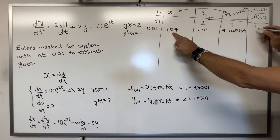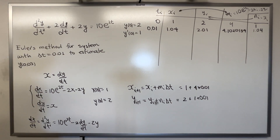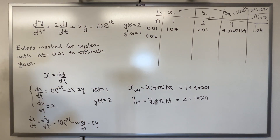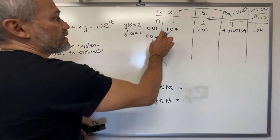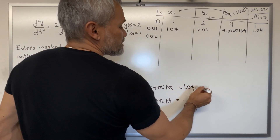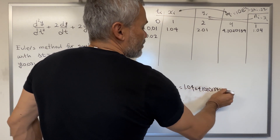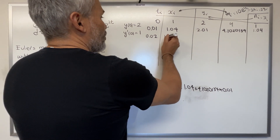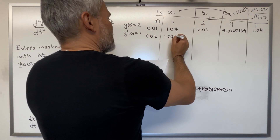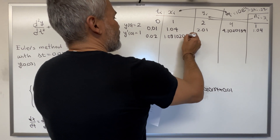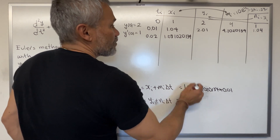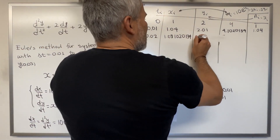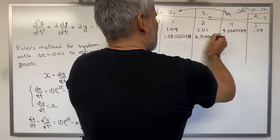n₁ = x₁ = 1.04. The next t is t₂ = 0.02. The next x value is: x₂ = 1.04 + 4.1020134(0.01) = 1.081020. The next y value is: y₂ = 2.01 + 1.04(0.01) = 2.0204.